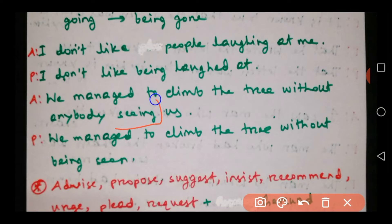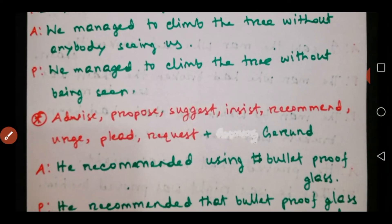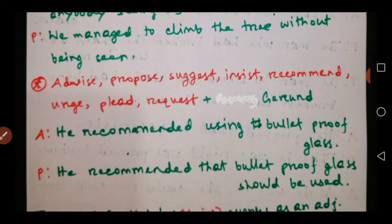The next example: 'We managed to climb the tree without somebody seeing us.' Here 'seeing' is our gerund. 'Somebody' is the subject of the gerund and 'us' is the object. 'We managed to climb the tree' remains the same. Then we use 'being seen.' We avoid 'us' and also avoid 'somebody' as it is not important to mention. So it becomes: 'We managed to climb the tree without being seen.'